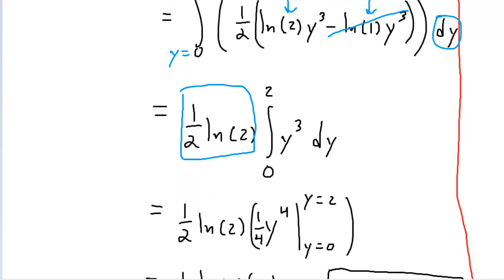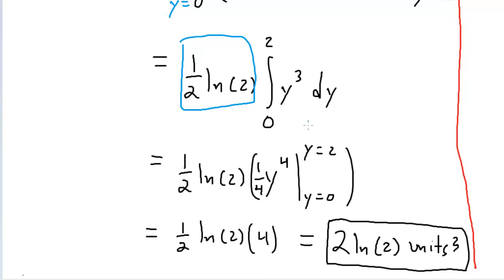Fortunately, that integral is very easy to compute. It's just going to be 1 fourth y to the fourth, from y equals 2 to y equals 0. And when you go through and do that, you end up with just 4. So the final answer is 2 times natural log of 2 units cubed, units cubed because it's a volume.